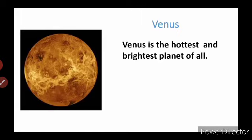The second planet is Venus. Venus is the hottest and brightest planet of all. Here is the image of Venus — by looking at it you can understand how hot it is. It is the hottest and brightest planet of the solar system.